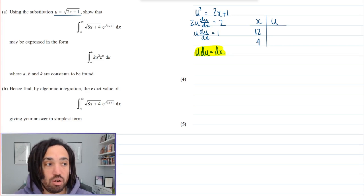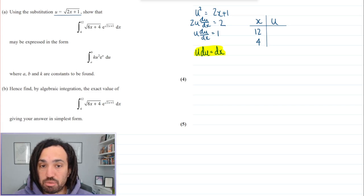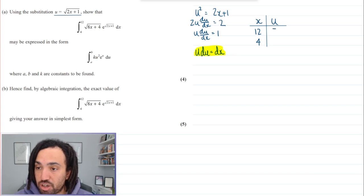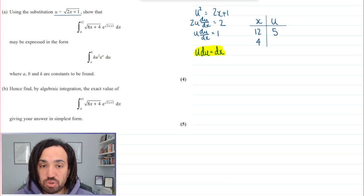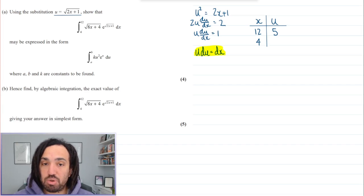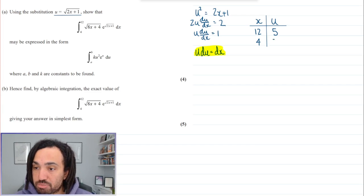So when x is 12 we're going to get 2 times 12 is 24 plus 1 is 25, square root gives me 5. And when x is 4, 2 times 4 is 8 plus 1 is 9, square root gives me 3.